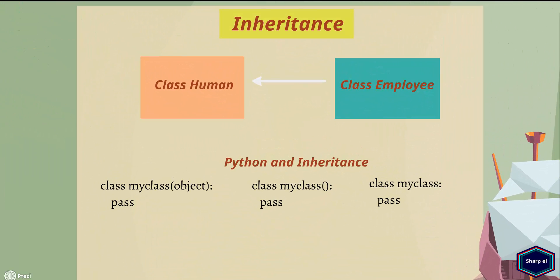Inheritance is just code reuse. We all know laziness is not good, but if you want to be a good programmer, you have to be very lazy. Because a lazy programmer always avoids writing new code and reuses his old code. This kind of laziness can be achieved with the help of inheritance.